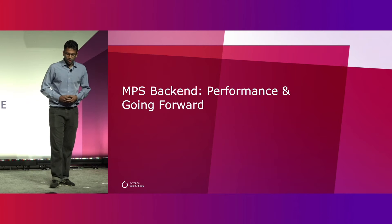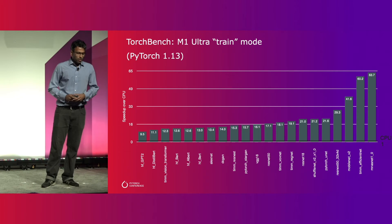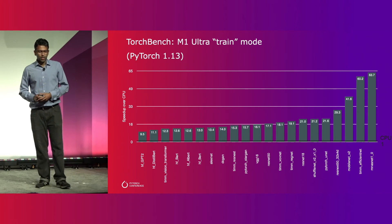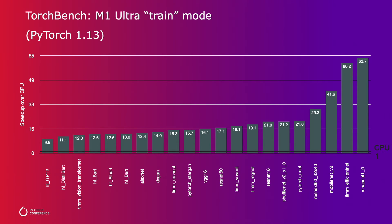Now let's look at some of the performance results. The chart shows the speedup of using MPS backend compared to CPU, where the baseline CPU is 1. The numbers were collected on M1 Ultra with the latest 1.13 release, using torch bench on a variety of networks. We have seen good speedups across different networks — up to 64 times faster on some, and on average 10x faster.